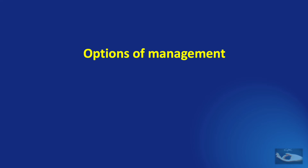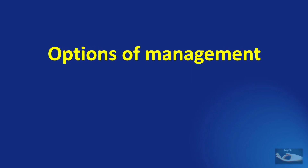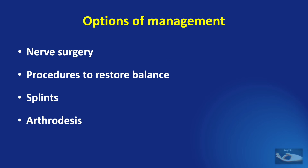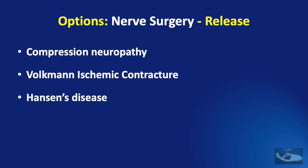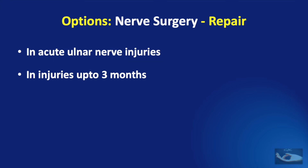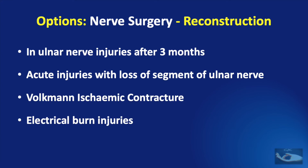Having considered injury and patient factors, there are four main options of management: nerve surgery, procedures to restore balance, splints, and arthrodesis. Nerve surgery includes nerve release or decompression, nerve repair, nerve reconstruction, and nerve transfer. Nerve release is indicated in compression neuropathy, Volkmann's ischemic contracture involving the ulnar nerve, Hansen's disease, and includes procedures like anterior transposition. Primary nerve repair can be done in acute ulnar nerve injuries and up to three months post-injury if there is no tension at the suture line. Nerve reconstruction is indicated for ulnar nerve injuries after three months, acute injuries with segmental loss, and Volkmann's contracture with segmental loss such as in electrical burns. Distal nerve transfers are mainly indicated in proximal ulnar nerve injuries.